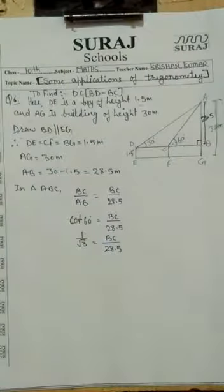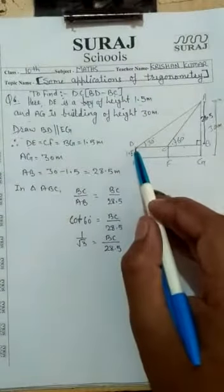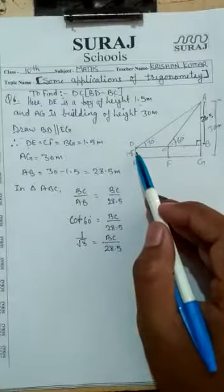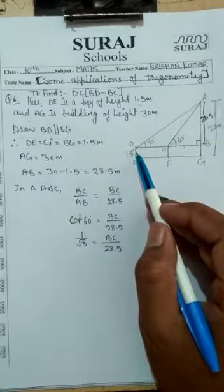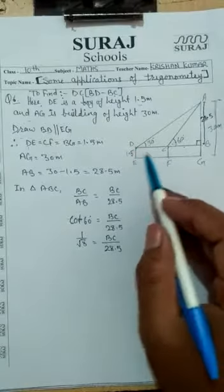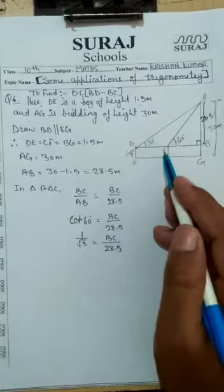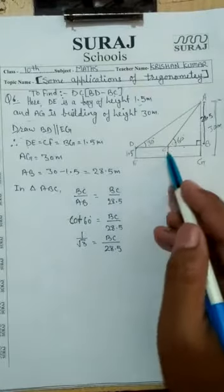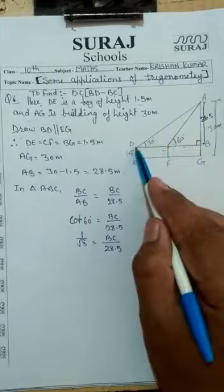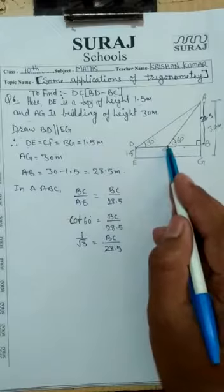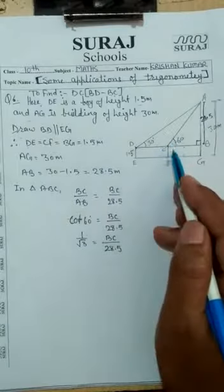The angle of elevation from the boy's eyes to the top of the building increases from 30 degree to 60 degree as he walks towards the building. At point D, the angle of elevation was 30 degree, and when he walked to point C, the angle of elevation became 60 degree.